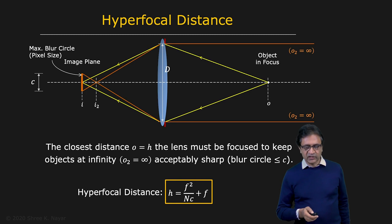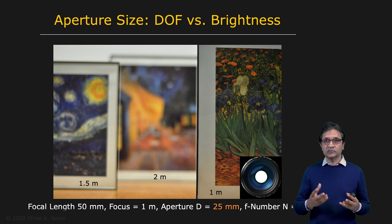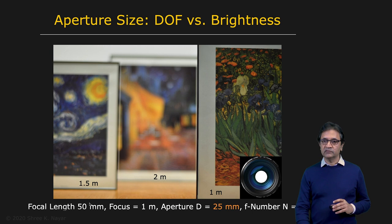Now let's look at the trade-off between depth of field and the brightness of the image. We use a lens rather than a pinhole camera because it creates brighter images, so let's see what price we pay in terms of depth of field. Here is a situation with three paintings: one at one meter, one at one-and-a-half meters, and one at two meters. We've used a lens with a focal length of 50 millimeters, focused on the painting at one meter with an aperture diameter of 25 millimeters — an F-number of two, wide open.